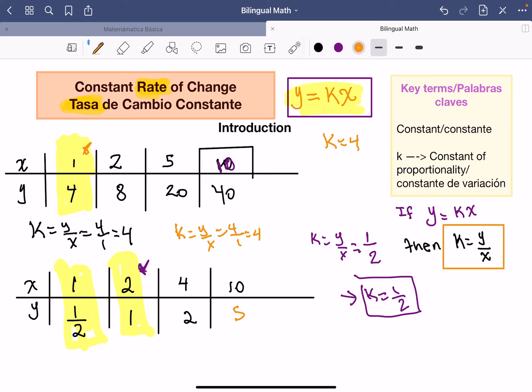Lo que hice aquí es bien fácil, bien fácil, encontré el valor de la k usando esta fórmula, usando y es igual a, perdón, k es igual a y sobre x y estoy usando estos valores. Entonces lo que hice es, k es igual a y sobre x, y es igual a 1, 1 sobre 2, 1 sobre 2. Y este es el valor que puse aquí, perfecto.